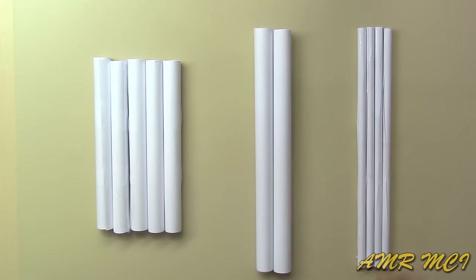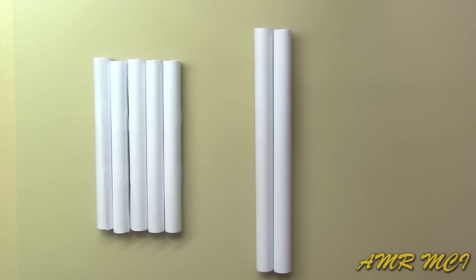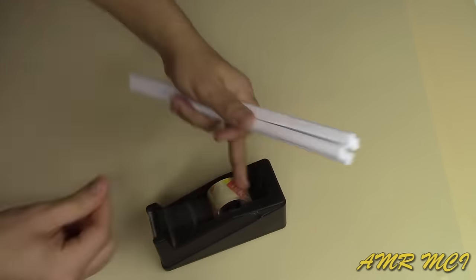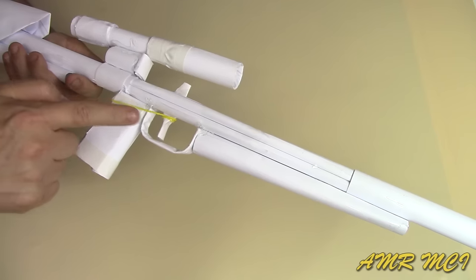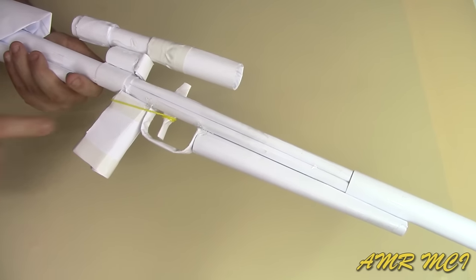Now we will start the process by taking four paper rolls and putting them together like that. Fix them together with some tape and make sure that you leave the area at the end untaped so that you can hold the trigger and the grip in place.